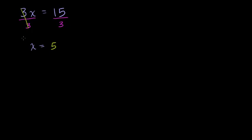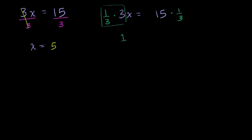You could also do this in a slightly different but equivalent way. Instead of dividing by 3, you could multiply both sides of the equation by 1/3. 1/3 times 3 is 1, so 1x is equal to 15 times 1/3, which is 5. And 1 times x is the same as x, so x is equal to 5. Dividing both sides by 3 is equivalent to multiplying both sides by 1/3.